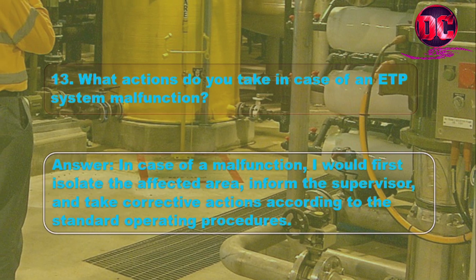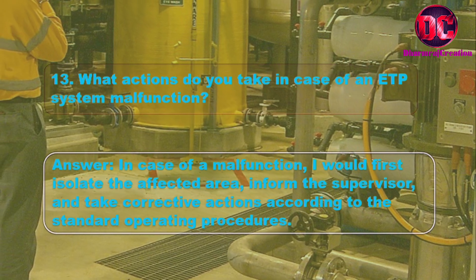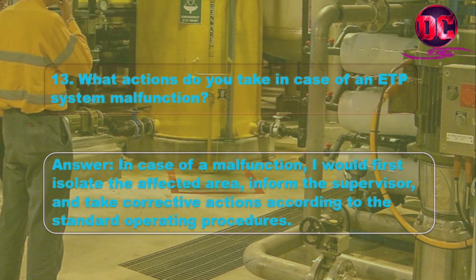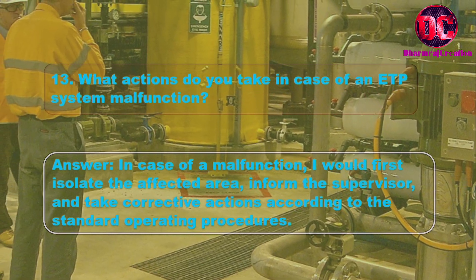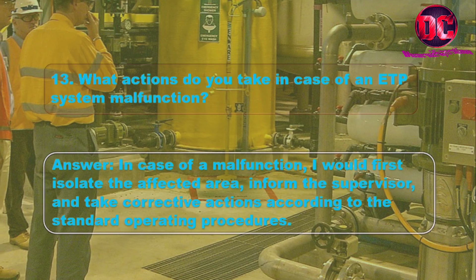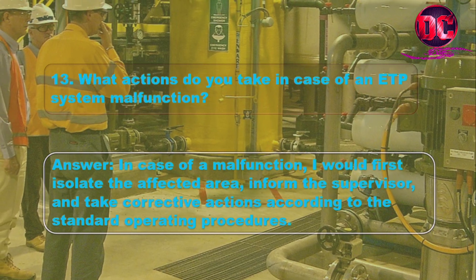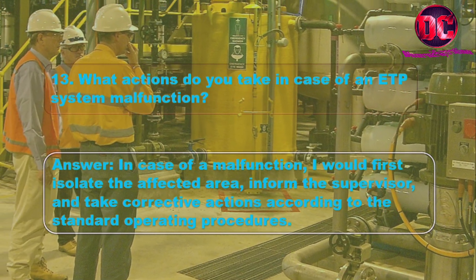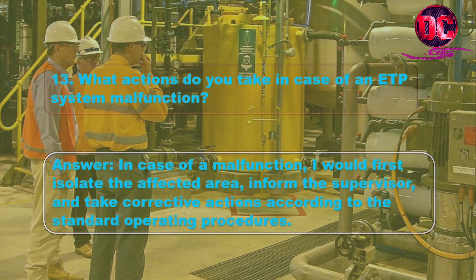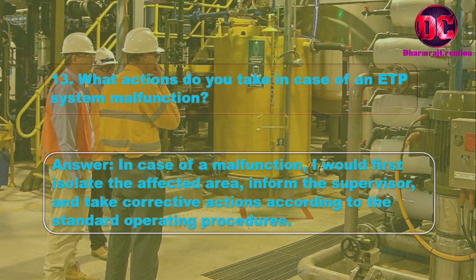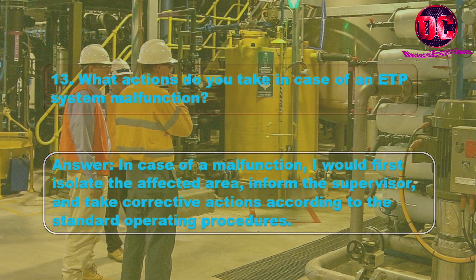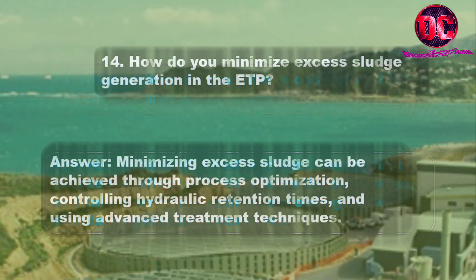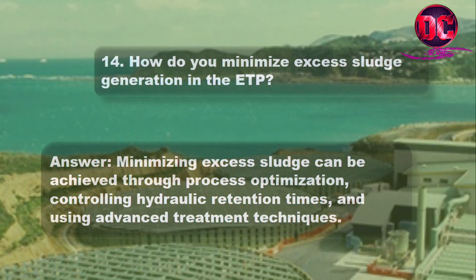13. What actions do you take in case of an ETP system malfunction? Answer: In case of a malfunction, I would first isolate the affected area, inform the supervisor, and take corrective actions according to the standard operating procedures.